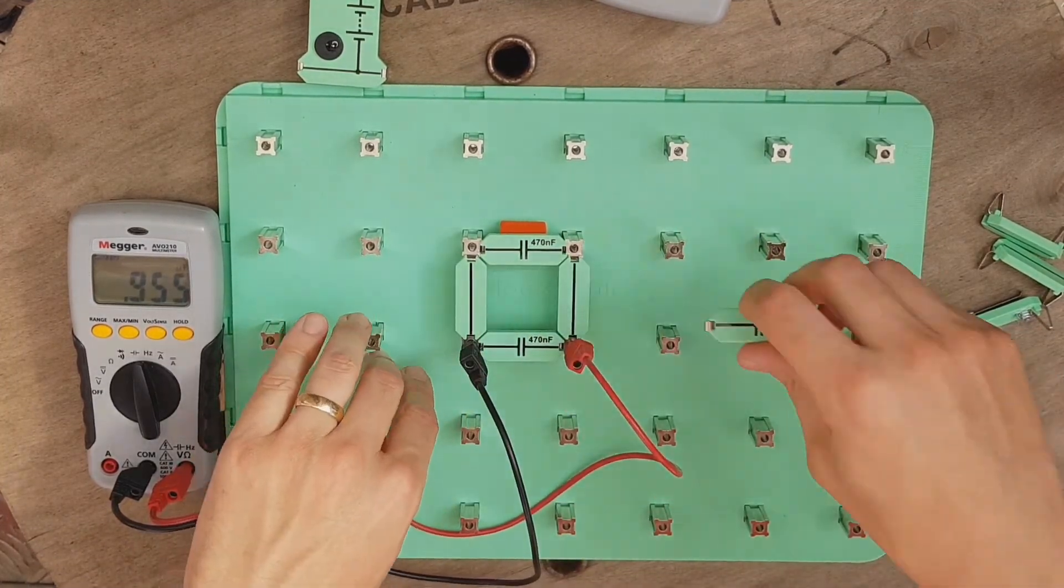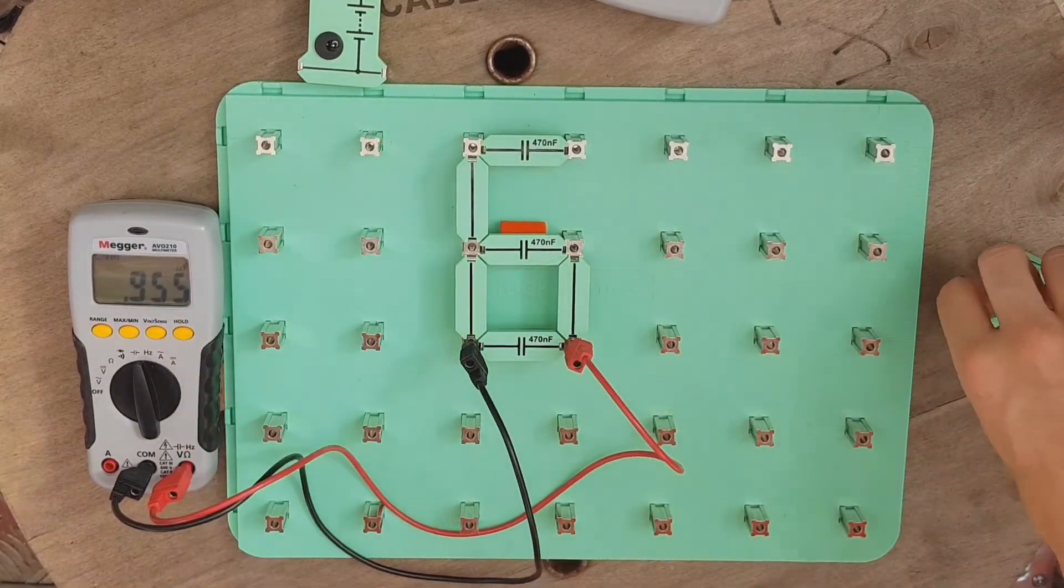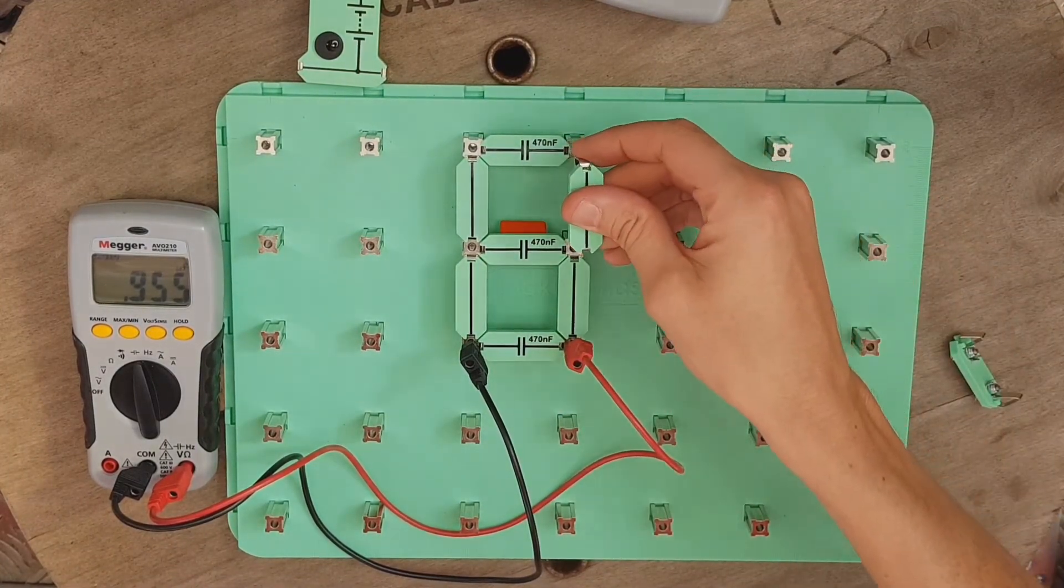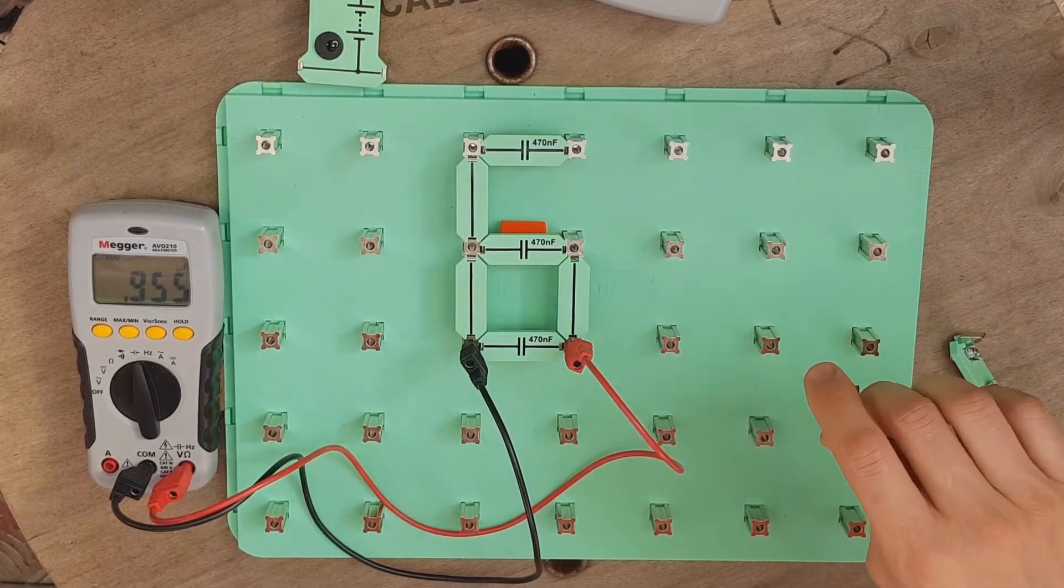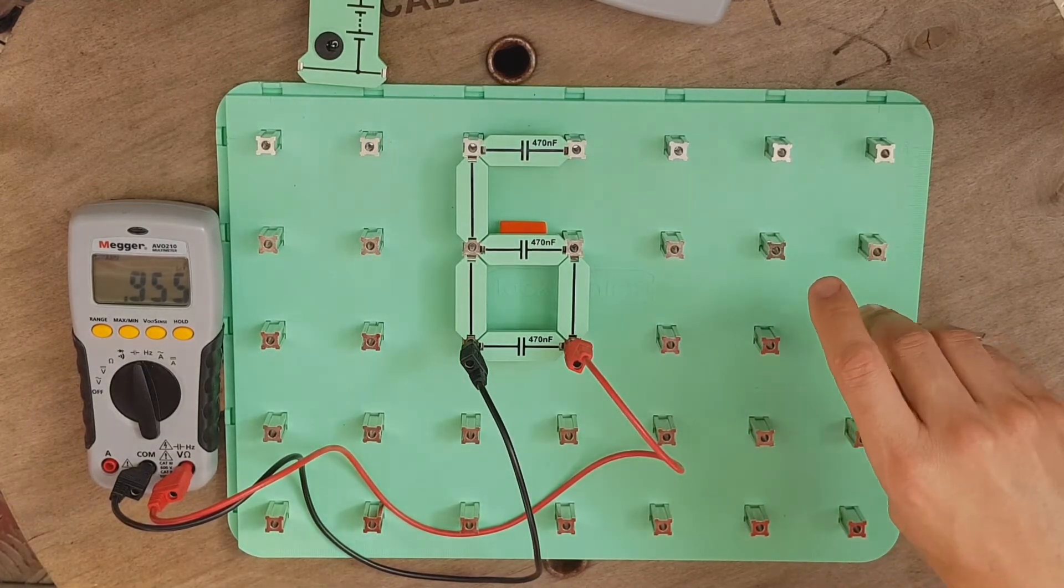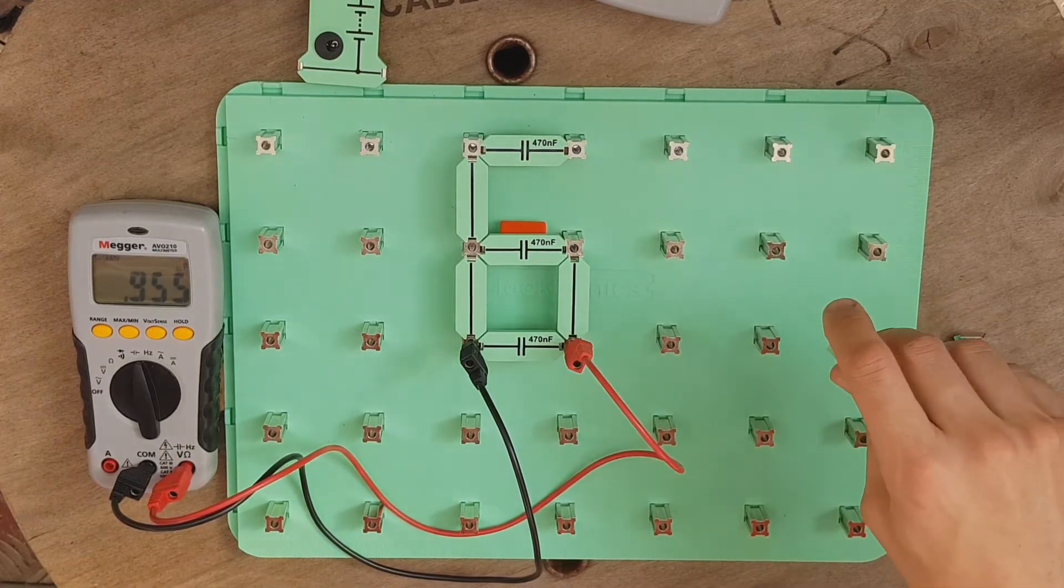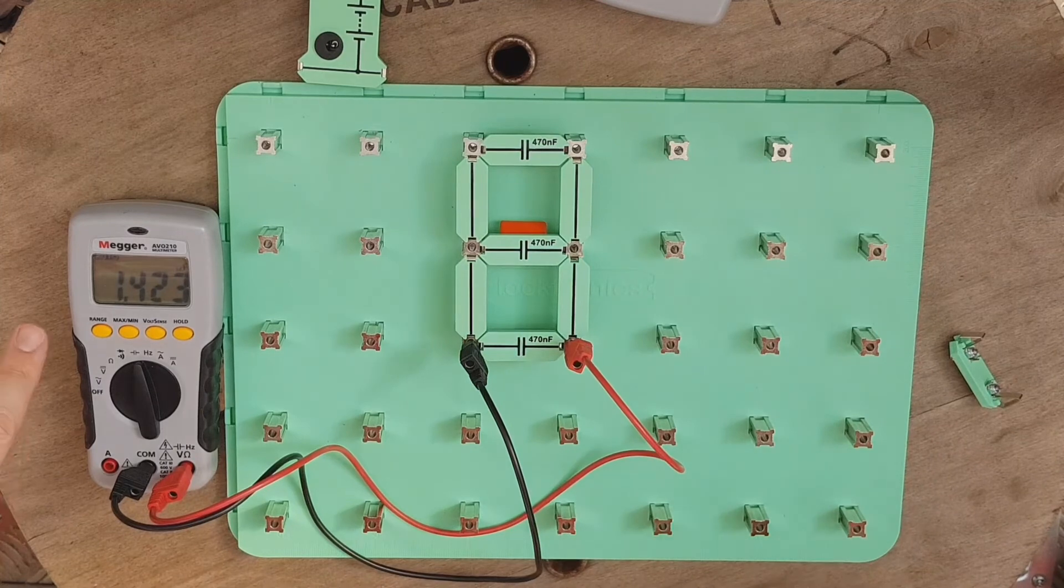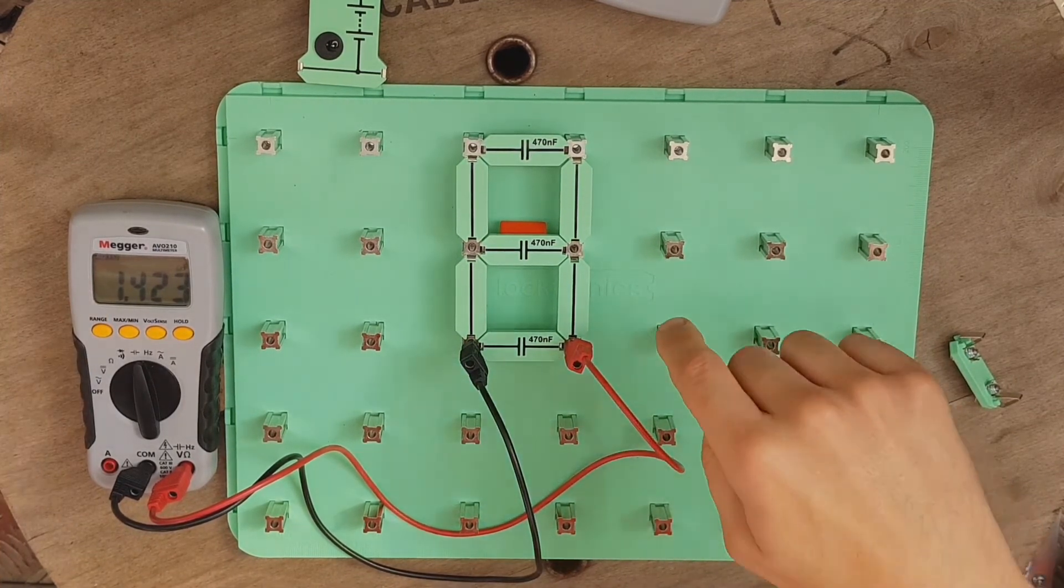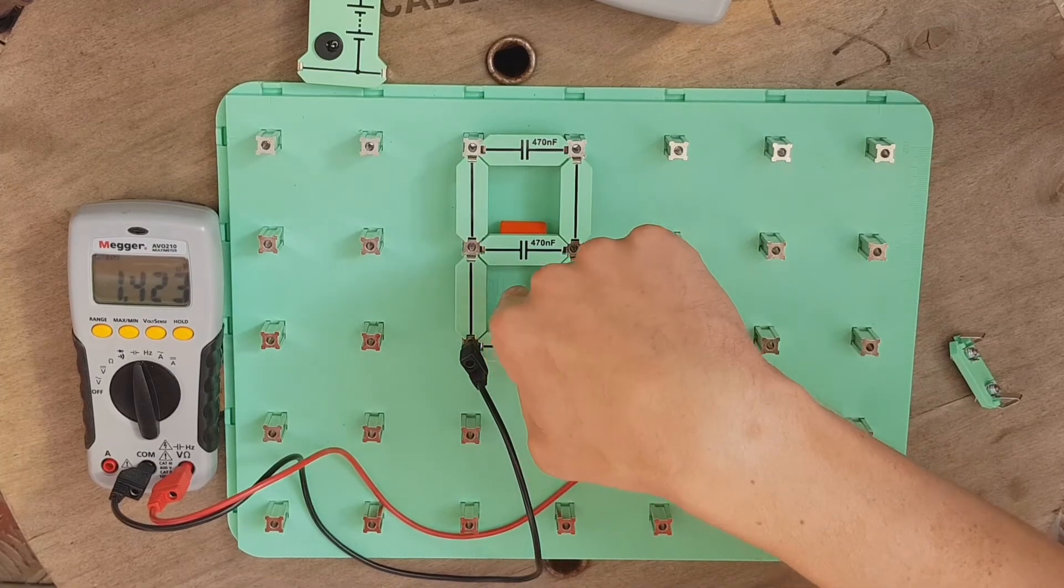If I add another capacitor of the same value into the circuit, how are we going to find out what the total capacitance is? It'll just be those three added together, exactly. If I put that in there now, we should get three times 470 - 1410, absolutely spot on. We'll plug that in and you can see there we've got something roughly around that mark. We've got these capacitors connected in parallel, but now it's following the rules for resistors connected in series - we're just adding the values together.